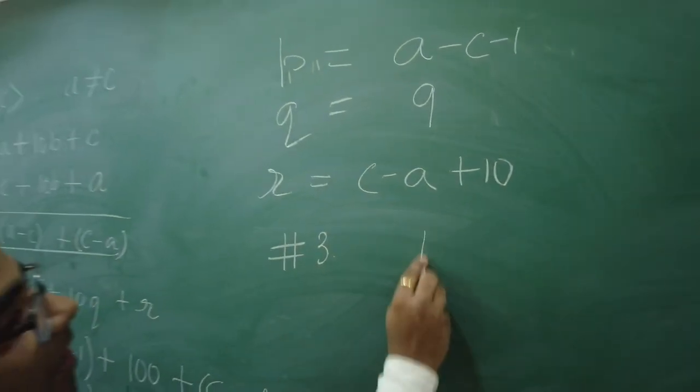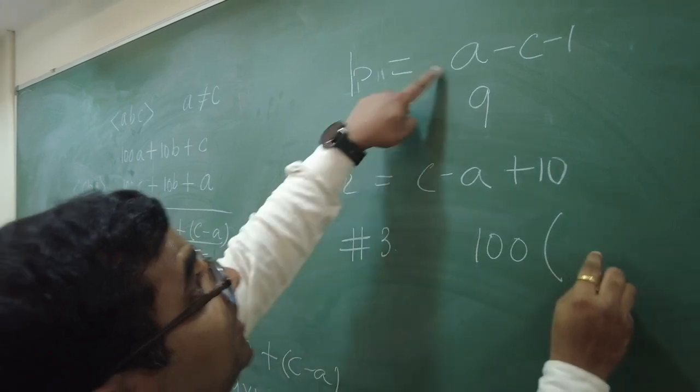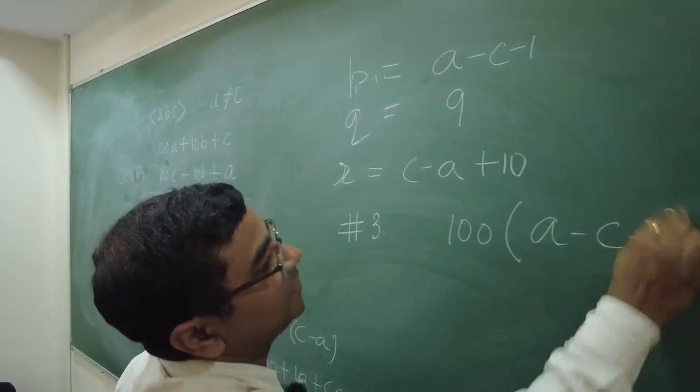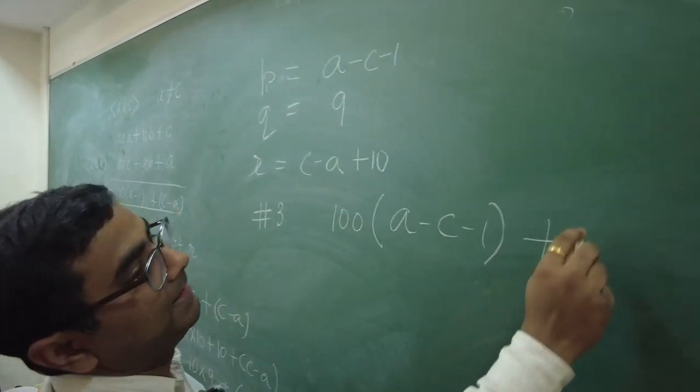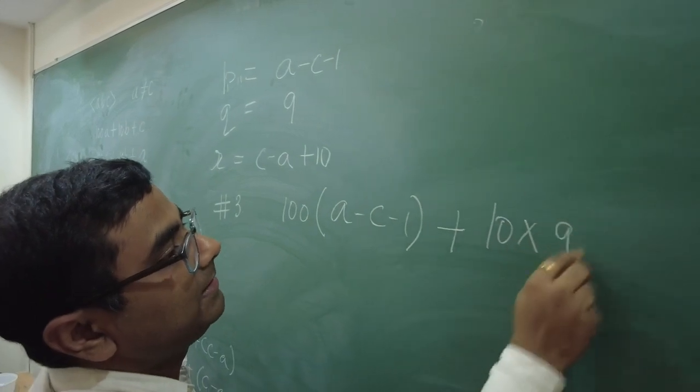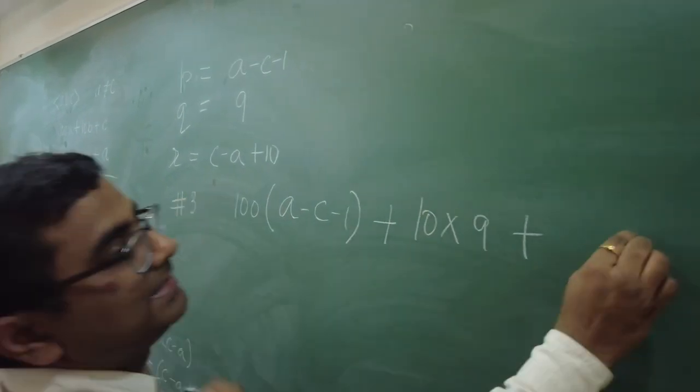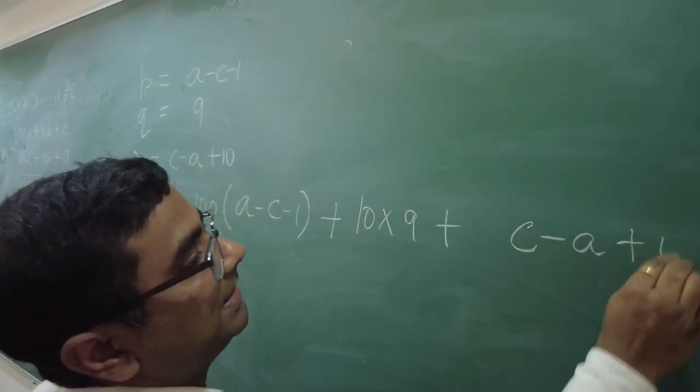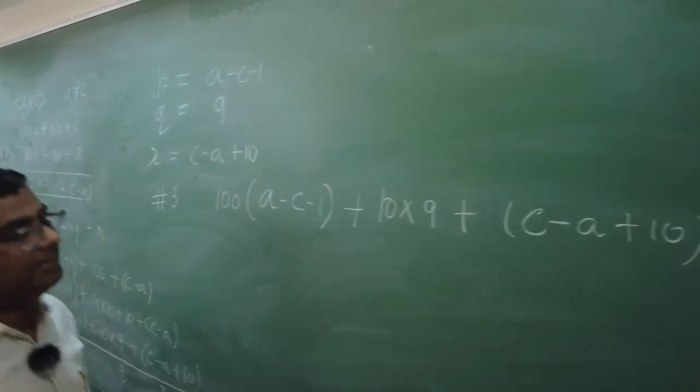Third number is 100 times this one. A minus C minus 1 plus 10 times 9 plus C minus A plus 10. Isn't it? Fantastic.